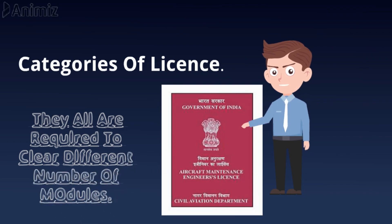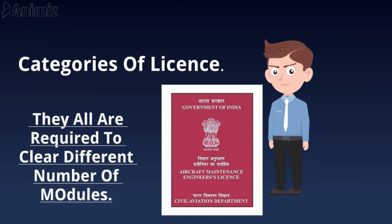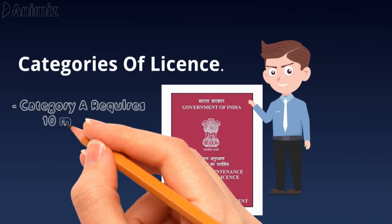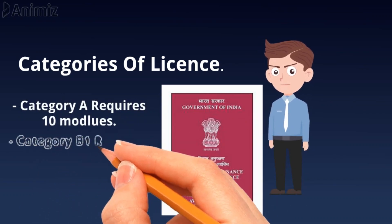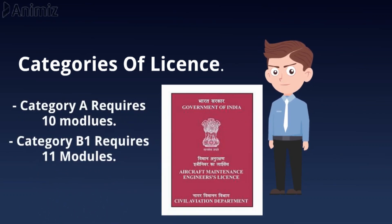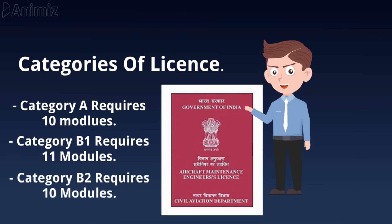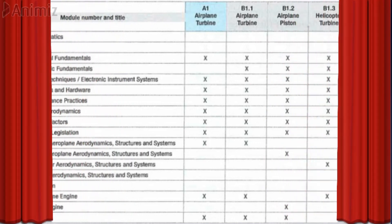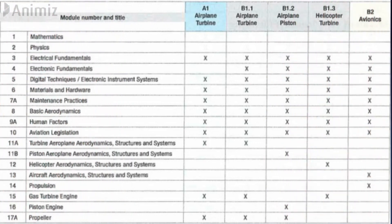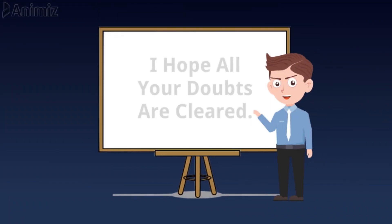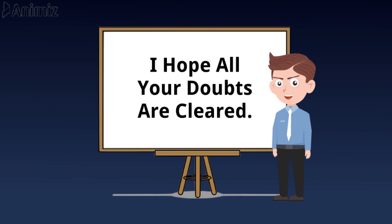For the A category you need to clear 10 modules, for B1 category you need to clear 11 modules, and for B2 you need to clear 10 modules. The list of modules that you need to clear is on your screen. I hope that after watching this video all your doubts will be cleared.